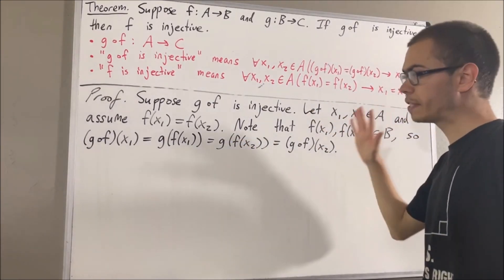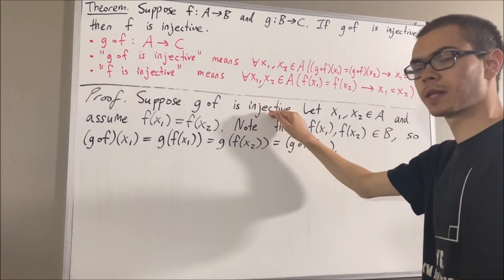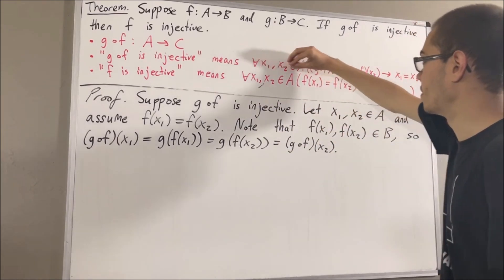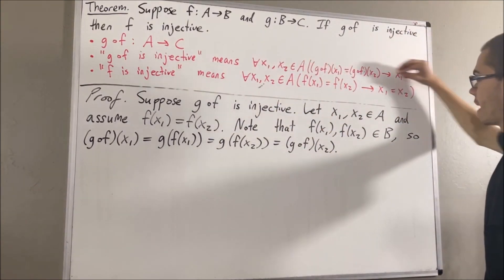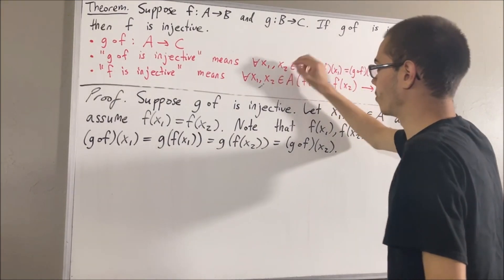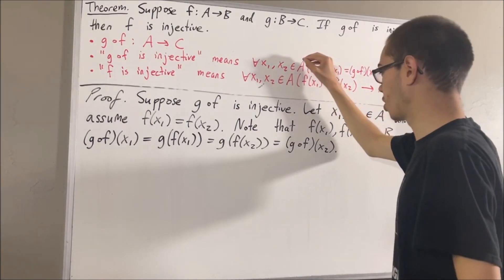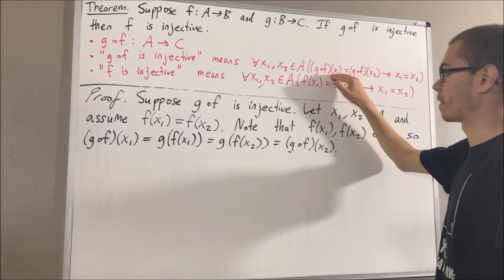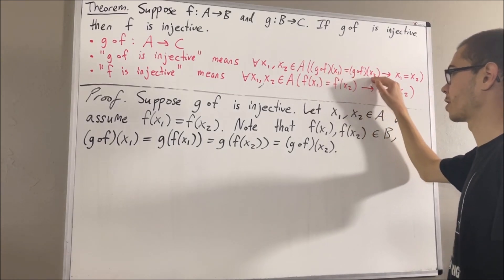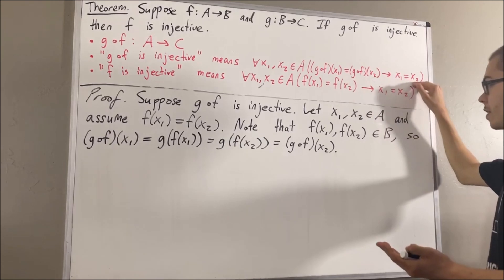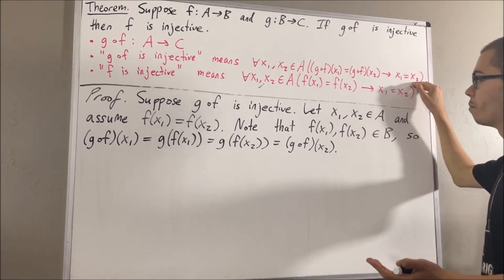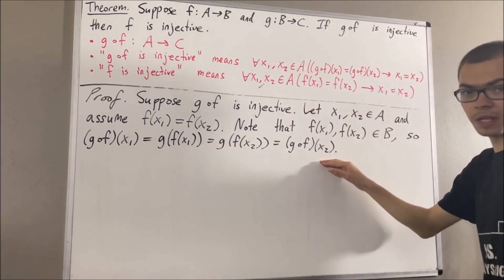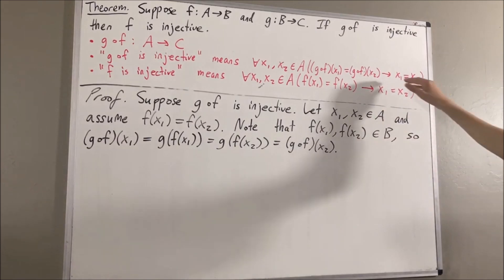Now let's use the fact that we know g compose f is injective. Since g compose f is injective, this means that the injectivity statement is true for every two elements in A, so in particular it must work for x1 and x2. Therefore, if g compose f of x1 equals g compose f of x2, then we can conclude x1 equals x2. But we already know that g compose f of x1 equals g compose f of x2, so therefore we can conclude x1 equals x2.